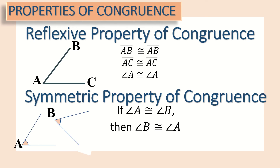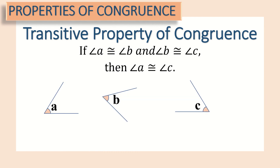Aside from the properties of equality, we also have some properties of congruence: the reflexive property, the symmetric property, and the transitive property. For the reflexive property, segment AB ≅ segment AB, segment AC ≅ segment AC, and angle A ≅ angle A — meaning an angle or segment is congruent to itself. For the symmetric property: if angle A ≅ angle B, then angle B ≅ angle A. For the transitive property: if angle A ≅ angle B and angle B ≅ angle C, then angle A ≅ angle C.